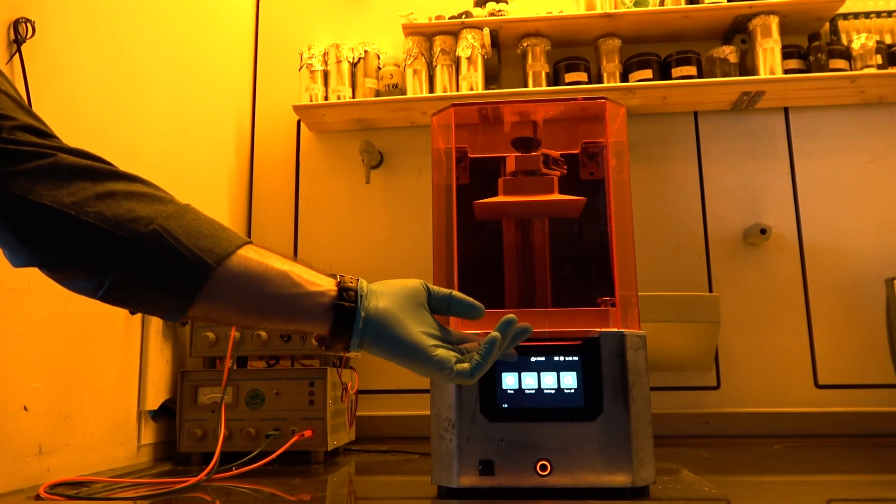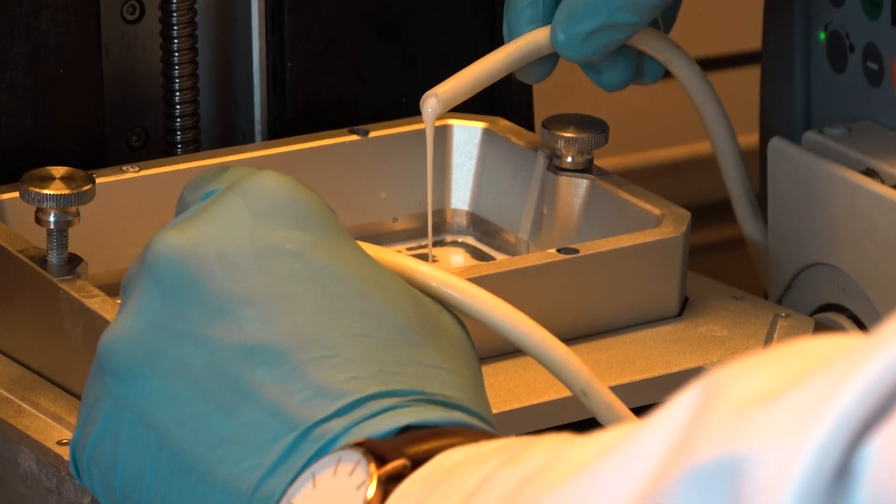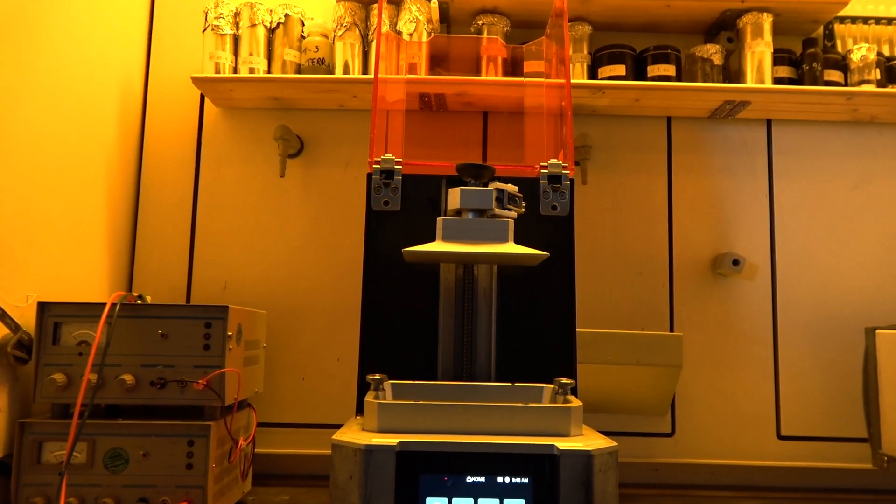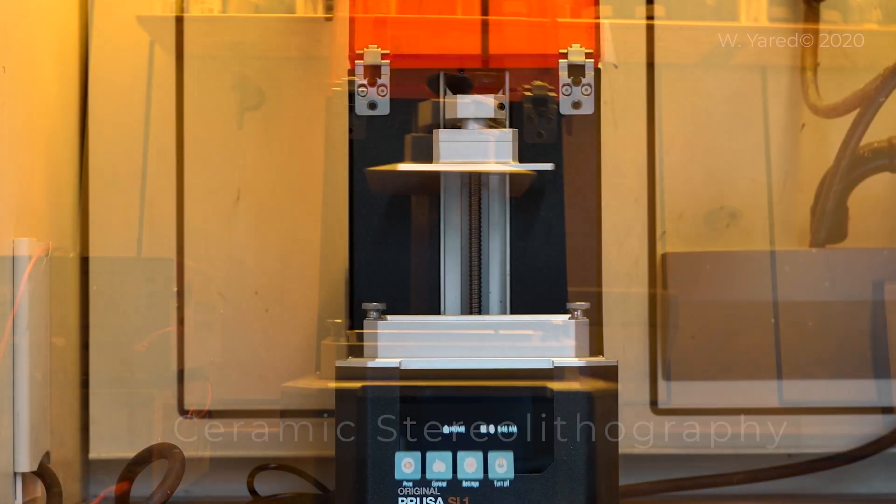Ceramics are solids, but we can shape them in a liquid. How do we do that? Well, we do it by using stereolithography.